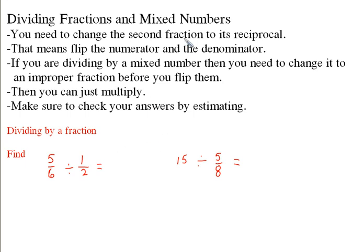You need to change the second fraction to its reciprocal and then just multiply. That means you flip the numerator and the denominator. If you're dividing by a mixed number, which we'll get to in the second page, then you need to change it to an improper fraction before you flip them. Then you just multiply. If you do this methodically and check your answers, you'll always get them right. Make sure to check your answers by estimating.